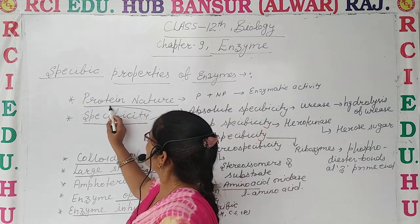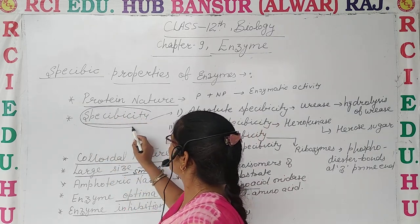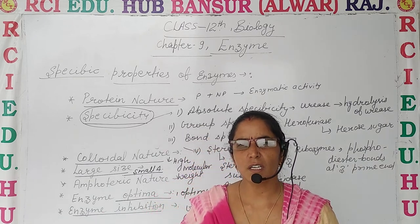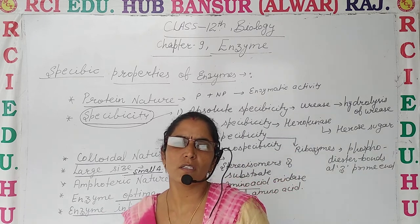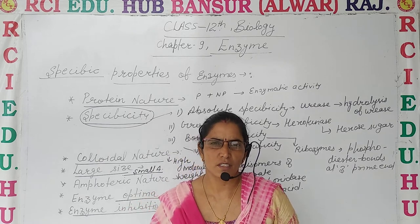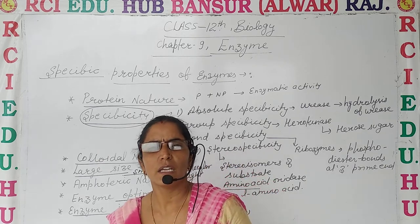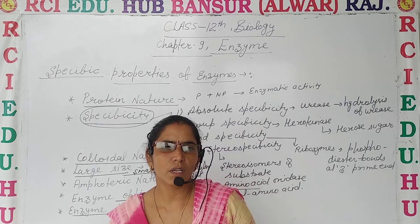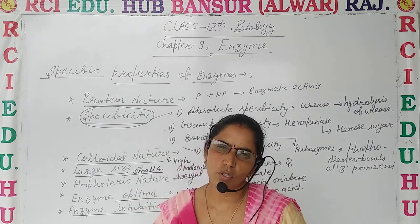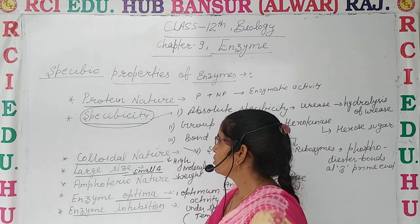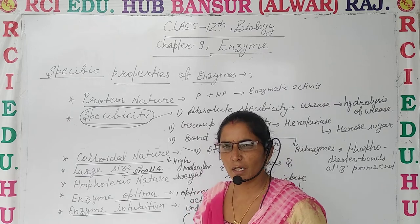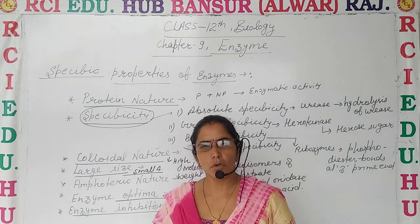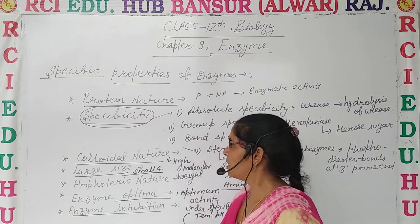Another property is specificity. Enzymes exhibit specificity for a particular type of reaction or for a group of reactions. Some enzymes can catalyze only a specific reaction, whereas some can catalyze more than one type of reaction. This is a very important property of enzymes, and specificity is further divided into four major parts.